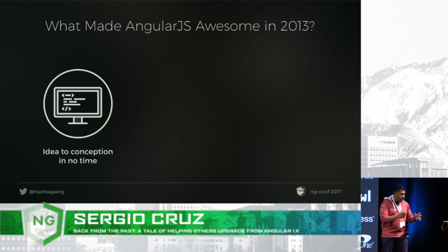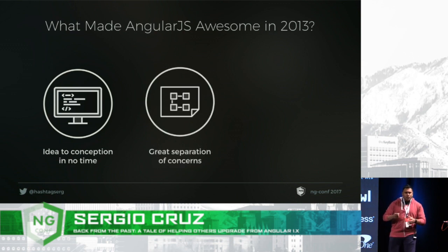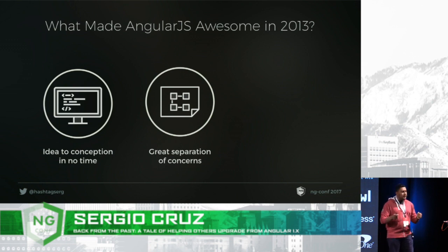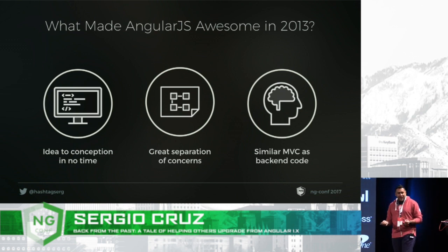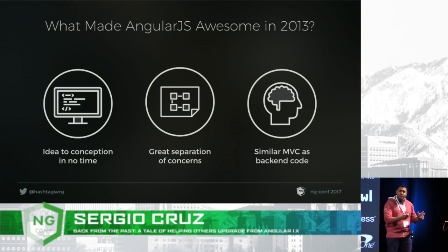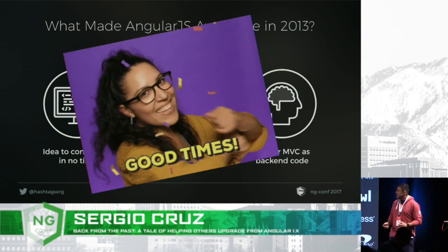I absolutely loved it. It was such a great experience writing AngularJS back then, once you learned it. Once you got those concepts down, going from idea to conception happened in no time — super fast prototyping. And I love that although we were able to move fast, the code still stayed pretty well organized, with lots of good separation of concerns. Back then I was writing a lot of jQuery-style code with no separation of concerns whatsoever. What I really loved about learning AngularJS was that there were a lot of similar concepts to what we were already used to on the server side — MVC and dependency injection — it was second nature.